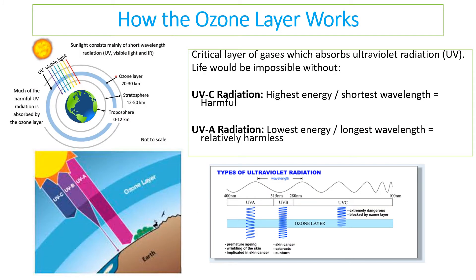You need to understand what the ozone layer is and how it works. Essentially it is a critical layer of gas. Ozone is O3 and it is a gas that absorbs ultraviolet radiation from the sun. Without the ozone layer, life would be impossible because ultraviolet radiation can have a lot of harmful effects.